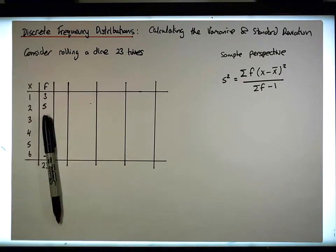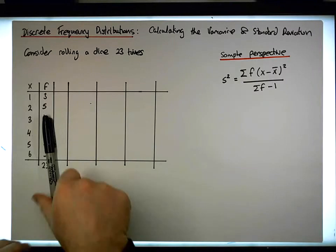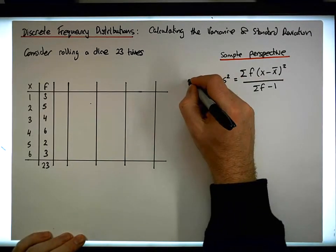The sample size minus one is what we're effectively dividing by here. So from a sample perspective, this is what the sample variance is. This is the variance.